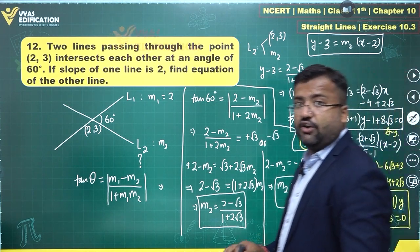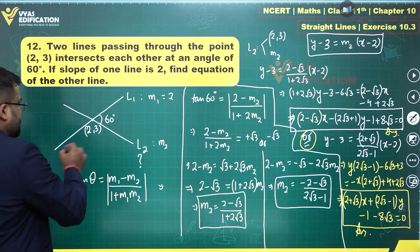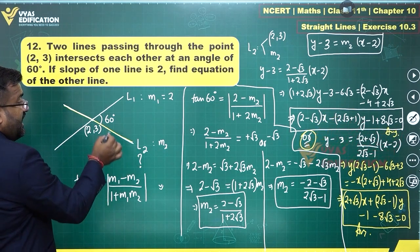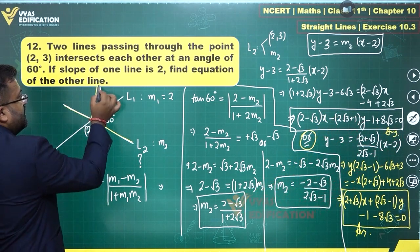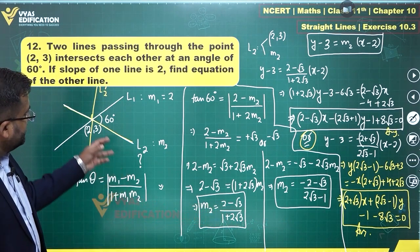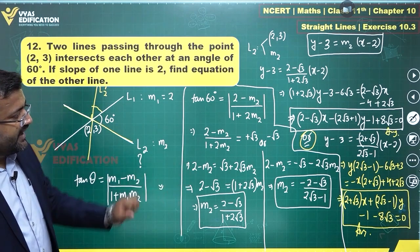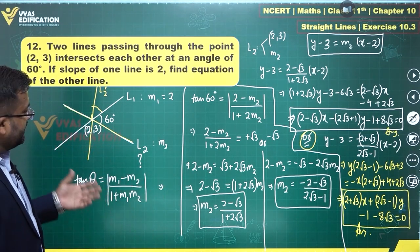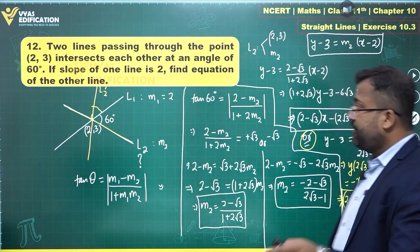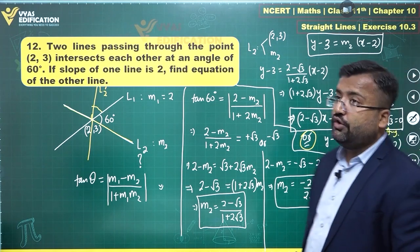So there are two possible answers because L2 can be on either side of L1 — the 60-degree angle can be formed in two ways, giving two lines L2 and L2'. That's the complete solution to Question 12, with two valid equations for the other line.